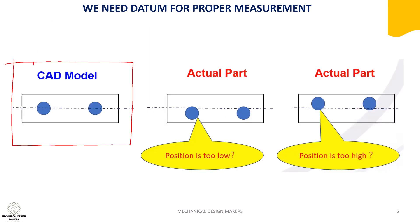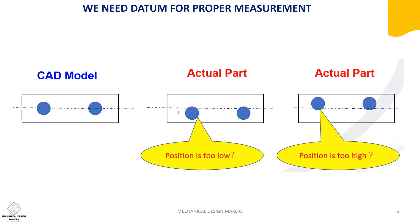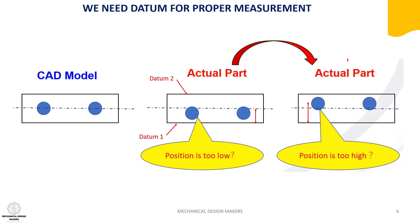Let's look at the drawing. This is the CAD model of the theoretical part, but when the part is actually produced, there will be some deviation. Here the hole is offset from center, and we want to know the position of this hole. Here there is no datum — let's see how measurement gives different values when we measure without datum. When we consider one edge as datum, the position is too low. If we rotate this part and consider another edge as datum, the position is too high. So when we measure this part without a proper datum, we get two different values. That is not good for inspection. That's why we need datum for proper measurement.